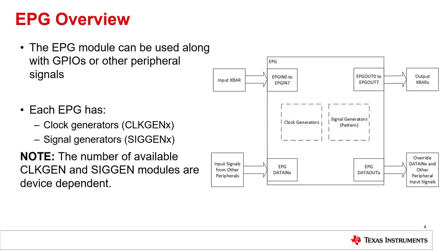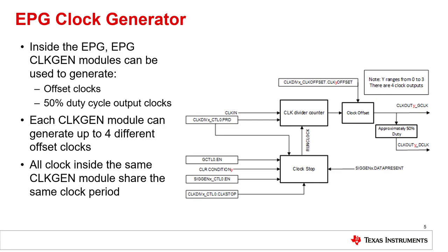The EPG consists of two main submodules: the clock generator submodule or clock gen, and the signal generator submodule or siggen. The number of clock gen and siggen submodules are device dependent. The EPG clock generator modules can be used to generate offset clock signals. The output of the clock gen modules will have an approximated 50% duty cycle. Each clock gen module can generate up to four separate offset clocks; however, all clocks generated by a given clock gen module will share the same clock period.